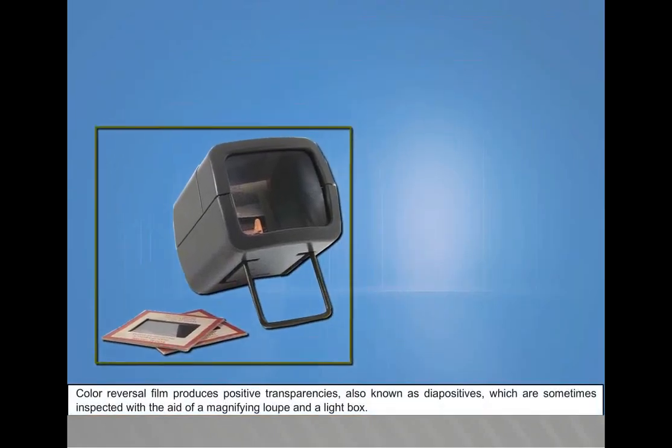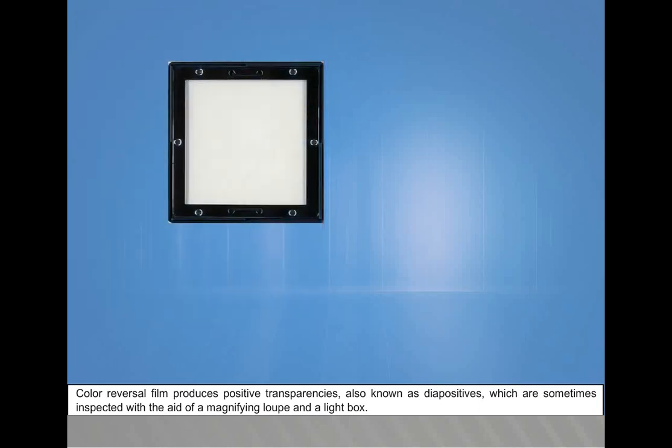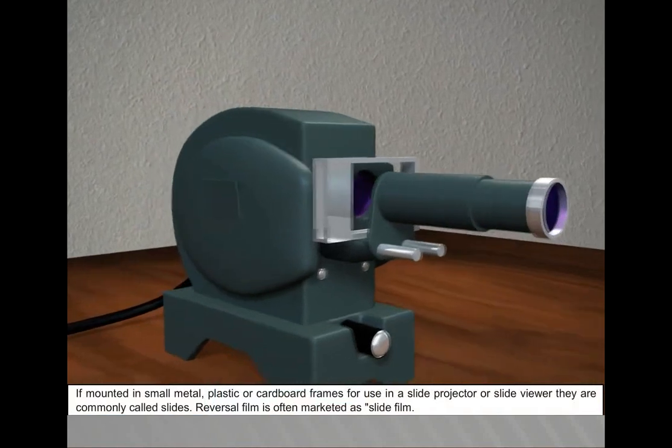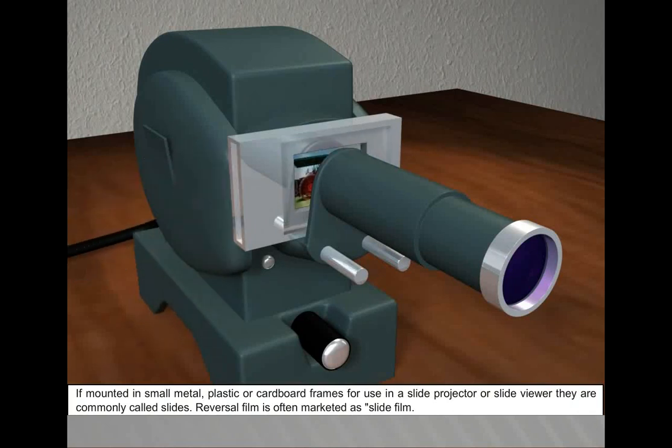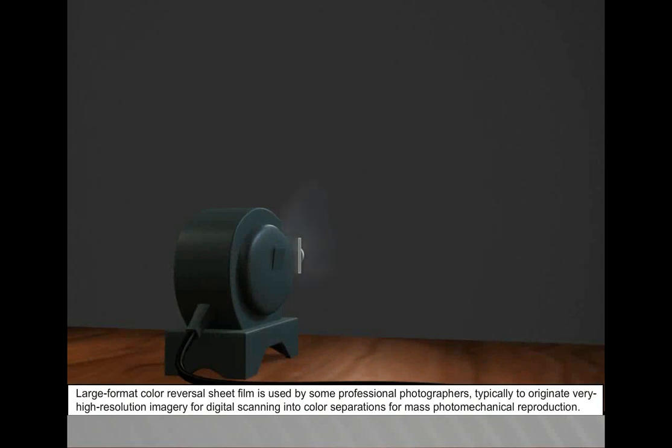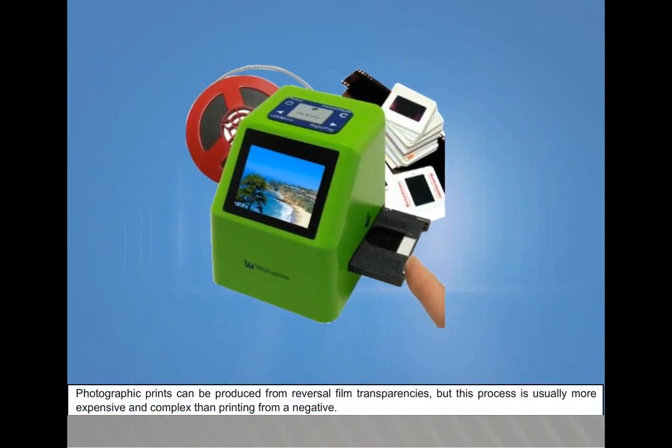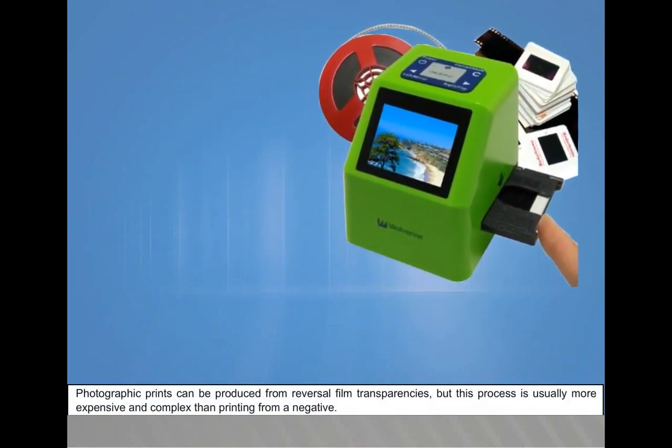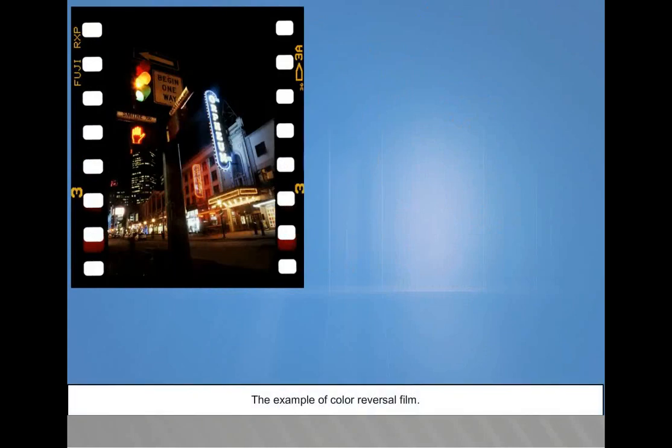Color reversal film produces positive transparencies, also known as diapositives, which are sometimes inspected with the aid of a magnifying loupe and light box. If mounted in small metal, plastic, or cardboard frames for use in a slide projector or slide viewer, they are commonly called slides. Reversal film is often marketed as slide film. Large format color reversal sheet film is used by some professional photographers, typically to originate very high-resolution imagery for digital scanning into color separations for mass photomechanical reproduction. Photographic prints can be produced from reversal film transparencies, but this process is usually more expensive and complex than printing from a negative.